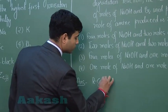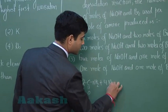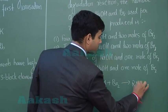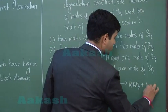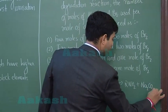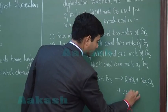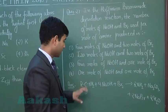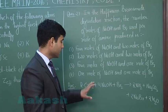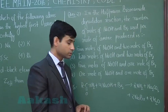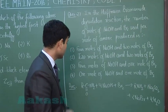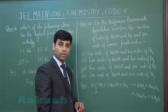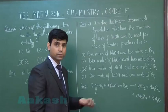Writing the Hofmann bromamide degradation reaction: amide RCONH₂ reacts with four moles of NaOH and one mole of Br₂ to give one mole of amine plus Na₂CO₃ plus two moles of NaBr plus two moles of water. From this balanced equation, four moles of NaOH and one mole of bromine are used, so the correct answer is option three.